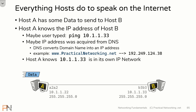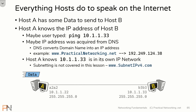Host A also knows that the IP address it's trying to speak to is on host A's own IP network. Host A will do this by looking at its own IP address and comparing it to its own subnet mask to determine how many other IP addresses are on the same network. This is all done through subnetting, which we won't be covering in this module. For now, just take my word for it that host A knows that 10.1.1.33 is on the same IP network as host A. If you want to learn more about subnetting, feel free to check out the free videos at subnetipv4.com.